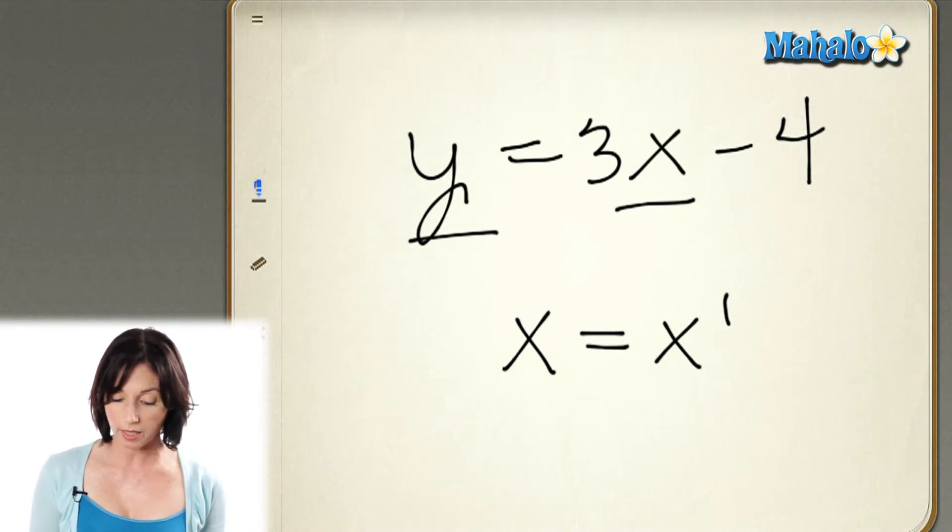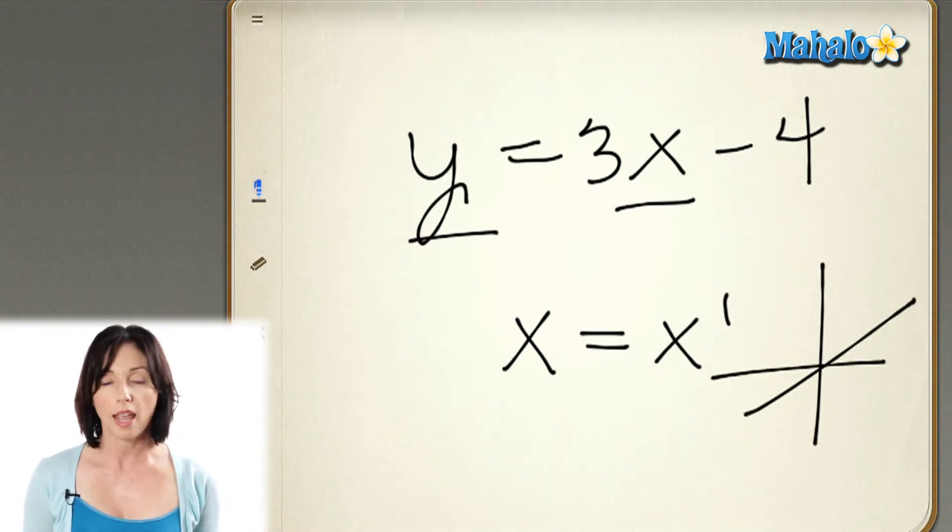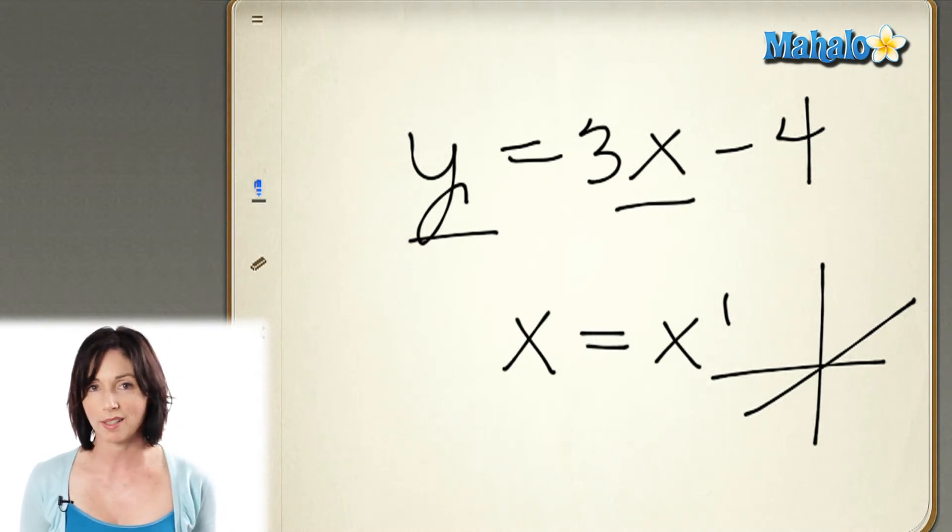Whenever you graph an equation like this, it will be a line, and it'll slope to the left or to the right, and it'll intersect the axes at different points depending on the values. But they're all equations of lines.